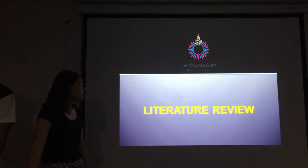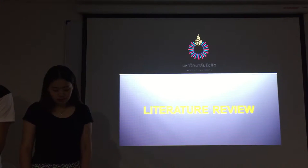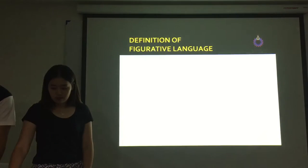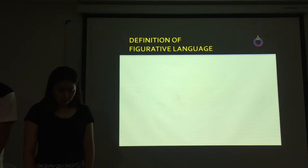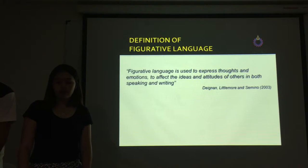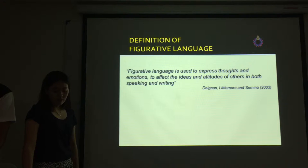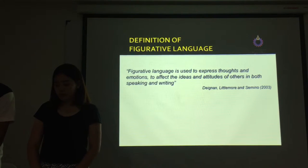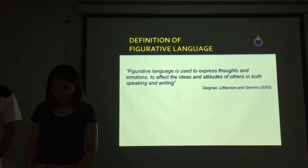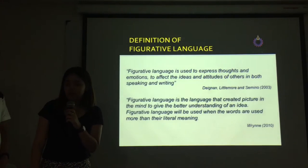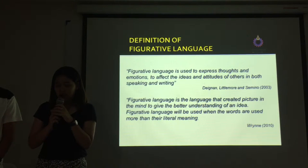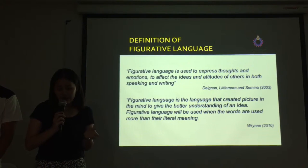Secondly, we will present about the literature review, which has two main points. First, definition of figurative language. Dignan, Lichtenmoor, and Seminoor said that figurative language is used to express truth and emotions. It affects the ideas and attitudes of others in both speaking and writing. According to Rai An, figurative language is the language that creates pictures in the mind to give a better understanding of an idea.